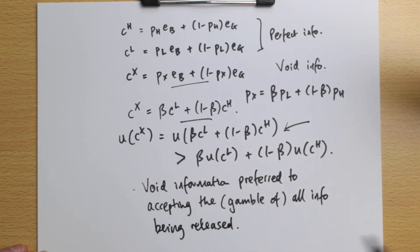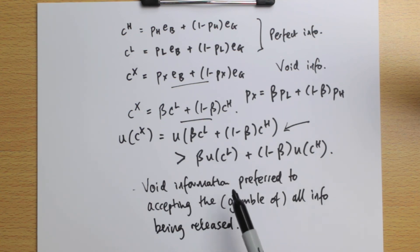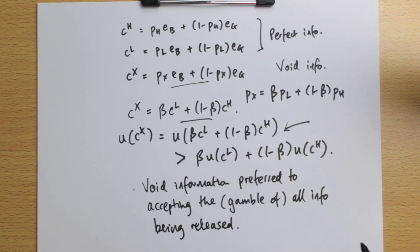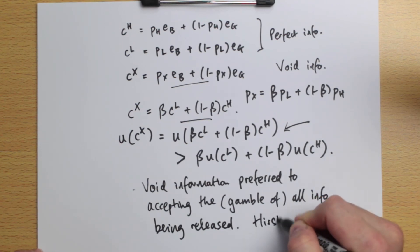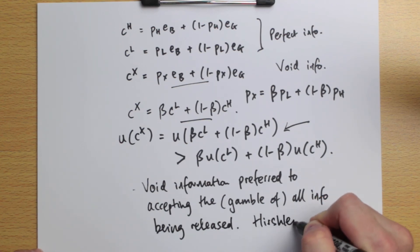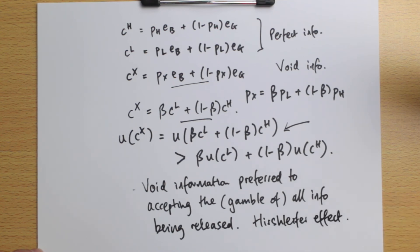In a sense, this decision maker will prefer the economy to have no information rather than perfect information. This is what we call the Hirschleifer effect, named after the economist Hirschleifer.